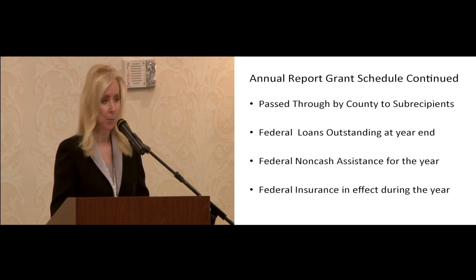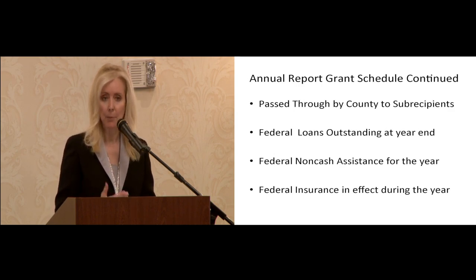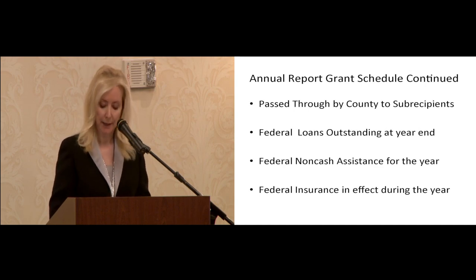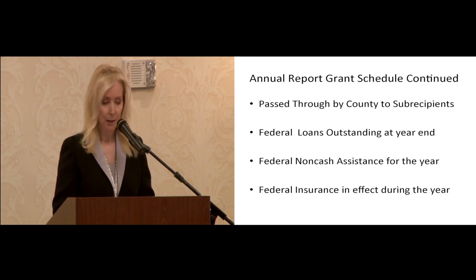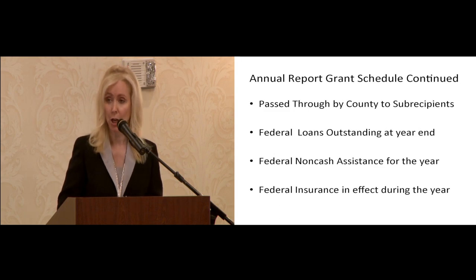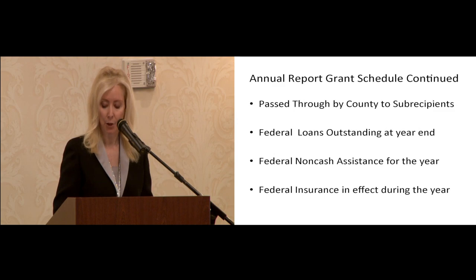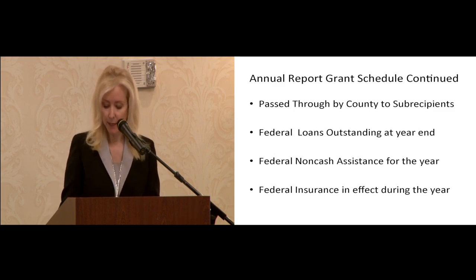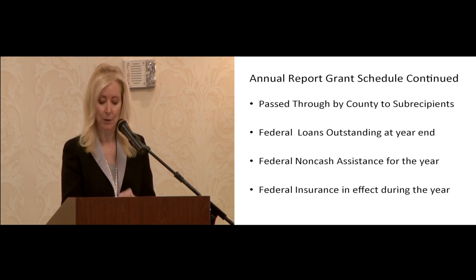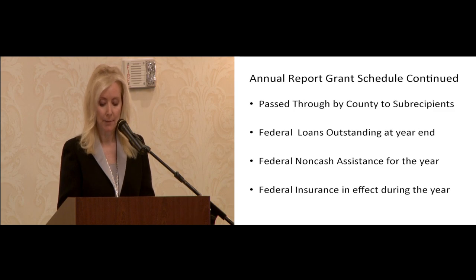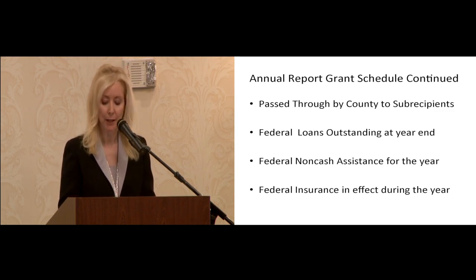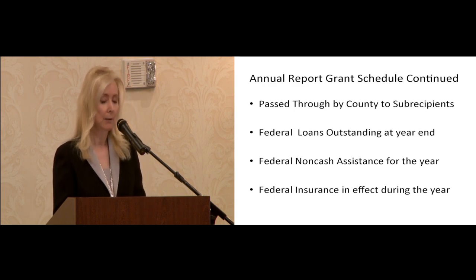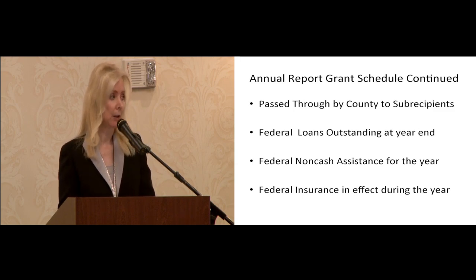If you have loans outstanding at year end, you'll be inputting that information — this is somewhat unusual. Economic development is one type of loan from the feds we do see occasionally. For the amount of federal non-cash assistance for the year — this could be something like immunization shots — you would put it at fair market value at the time of receipt. The last field is amount of insurance in effect during the year, which is federal assistance provided to assure reimbursement for losses. I could not find any examples of this, and I don't think it's something you really have to worry about.